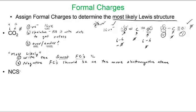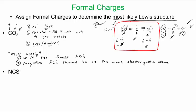We want to choose the structure with the fewest formal charges, so the most likely structure is the symmetric double-bond CO2. The asymmetric structure might exist at less than one percent. This is experimentally verified — scientists measure bond lengths, which are consistent with double bonds on both sides of the carbon.